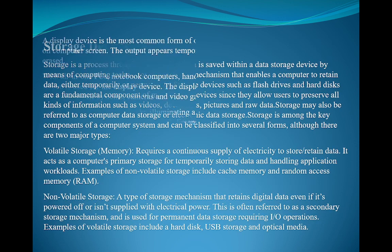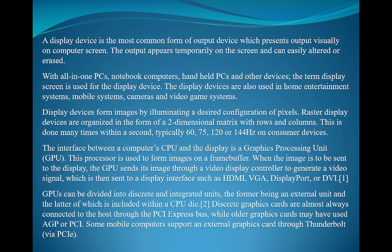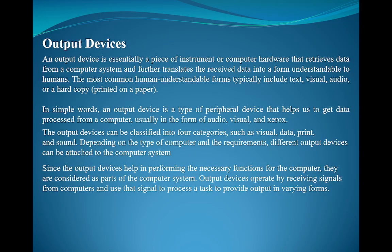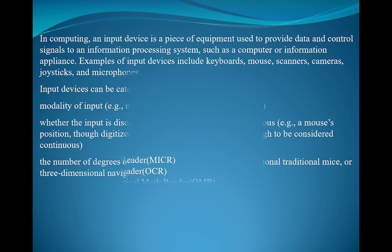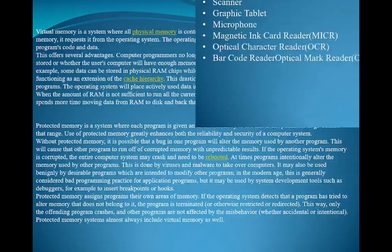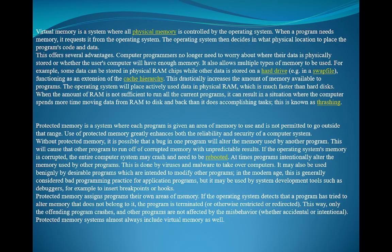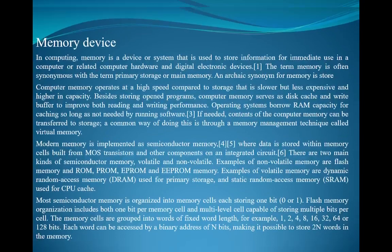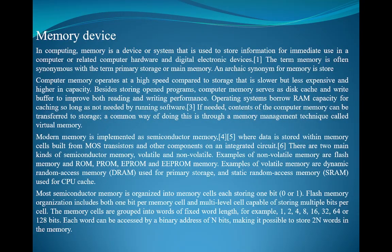The main parts of a computer system are five types: output device, storage device, processing unit, input device, and memory. I have covered the main parts of computer systems. This lecture is enough for today. The remaining part we will discuss in the next lecture. Thank you.